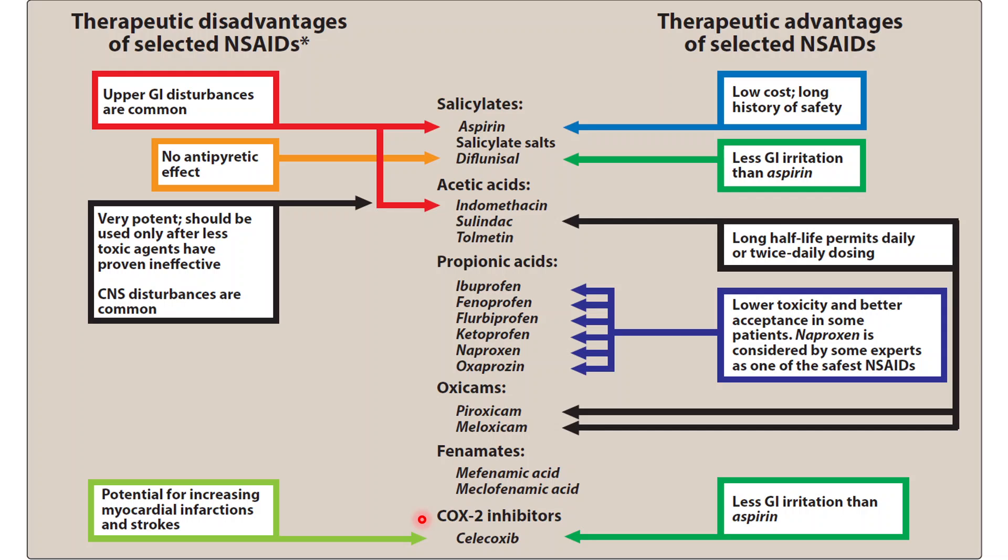For pregnancy, NSAIDs are in pregnancy category C in the first and second trimester, and that is why acetaminophen is preferred during pregnancy. In the third trimester, NSAIDs should be avoided due to the risk of premature closure of the ductus arteriosus. It is better not to use analgesics during pregnancy at all, or use only acetaminophen.